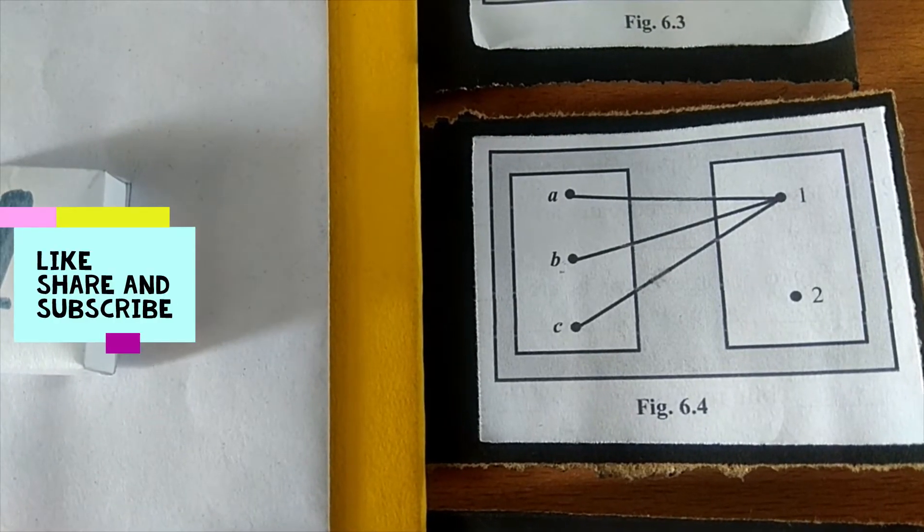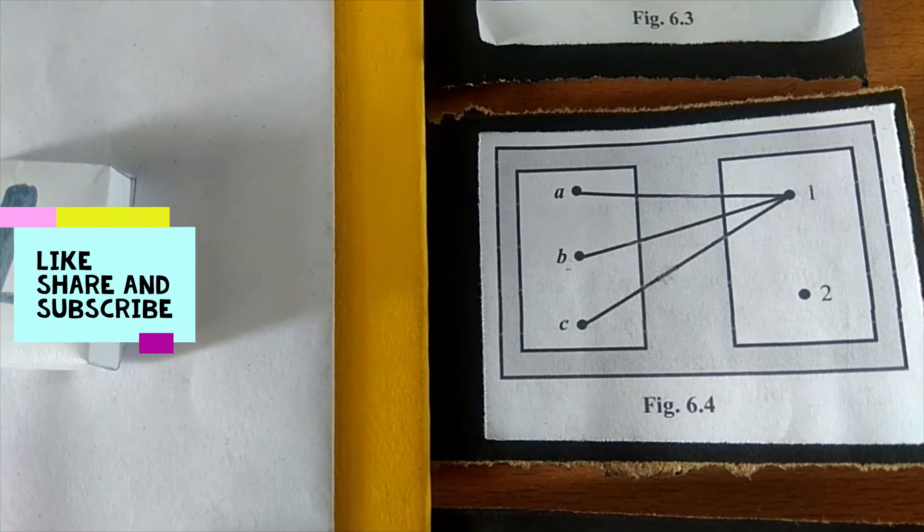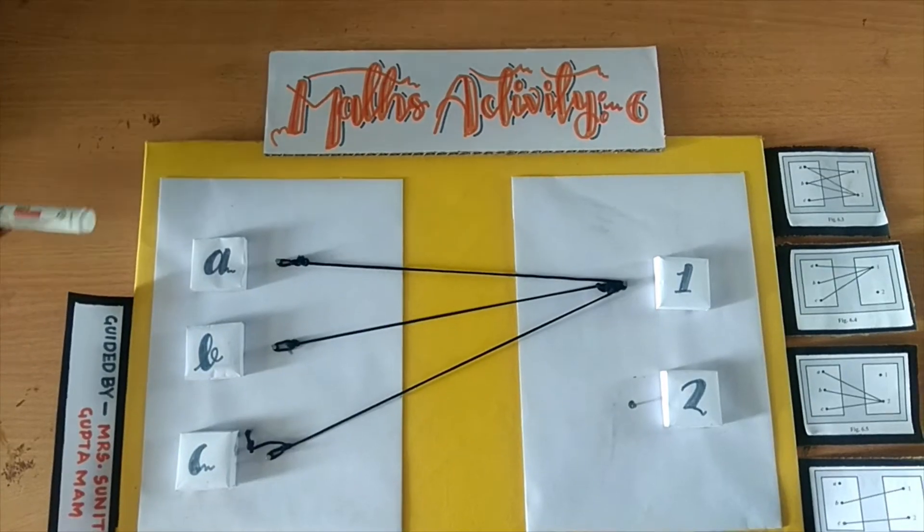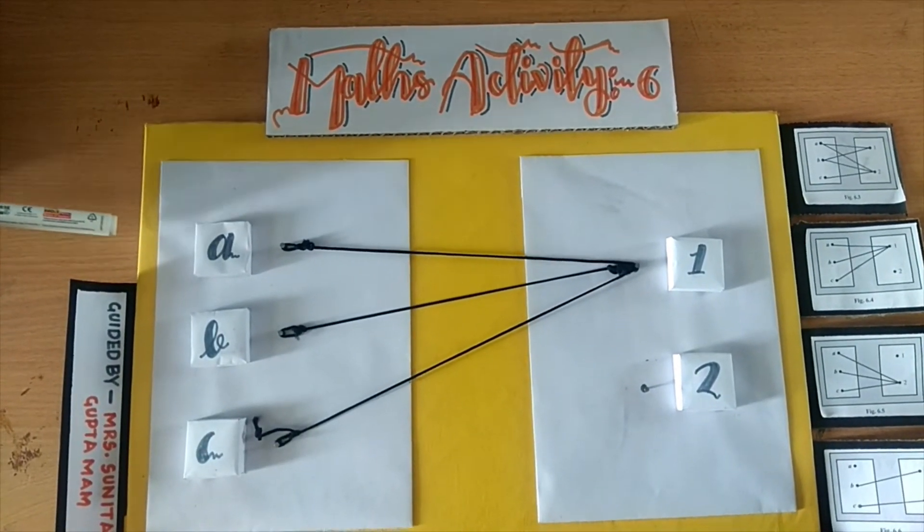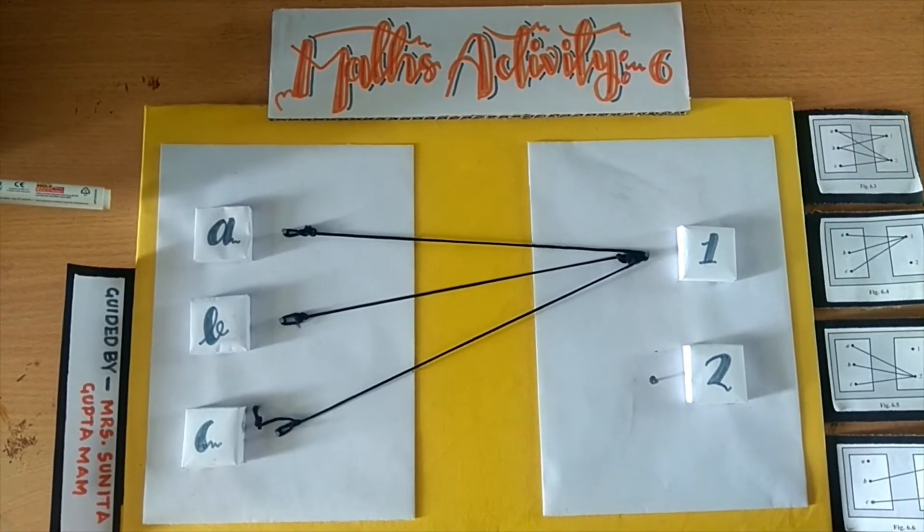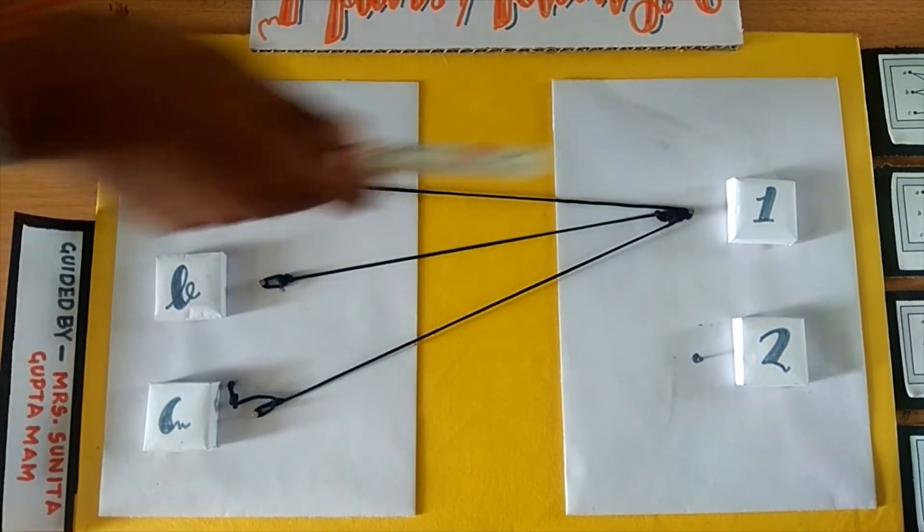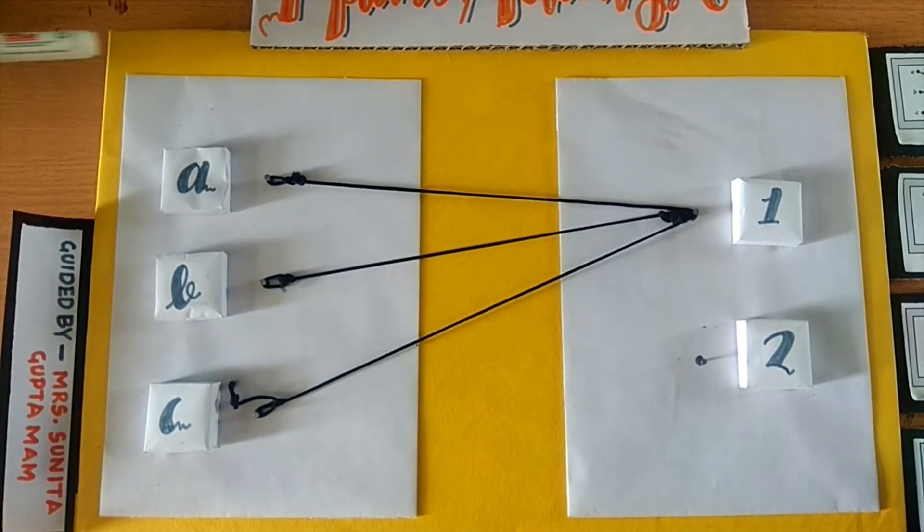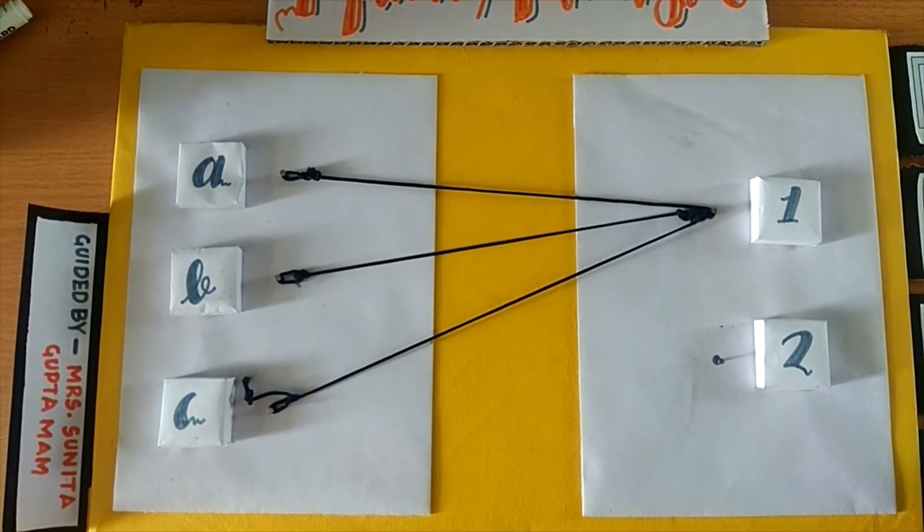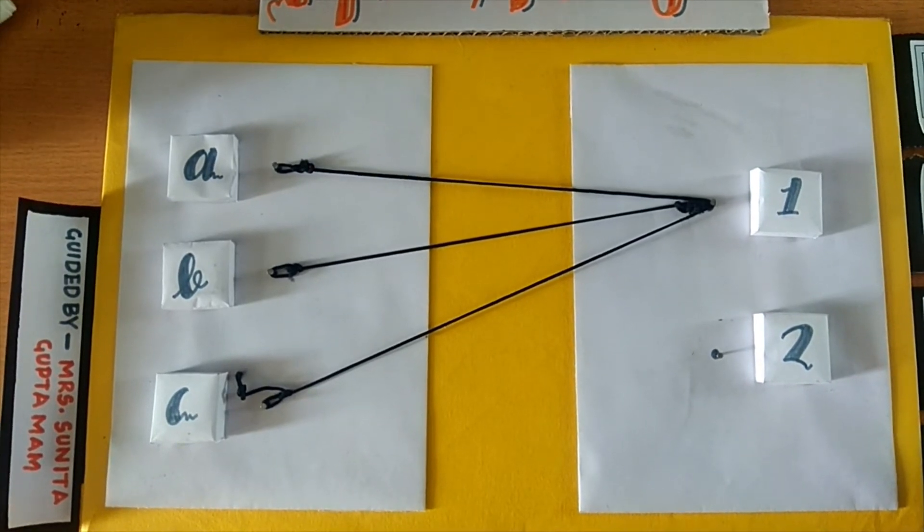Here again I fixed the strings as shown in figure 6.4. If we go to figure 6.4, it is a function not a relation because here A, B, C is related to A1. All elements of the first set are related to some element of the second set and the ordered